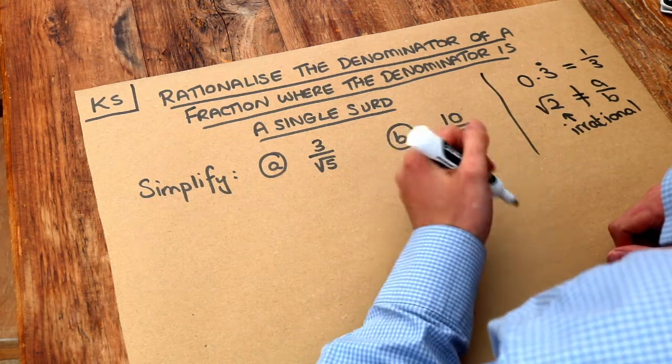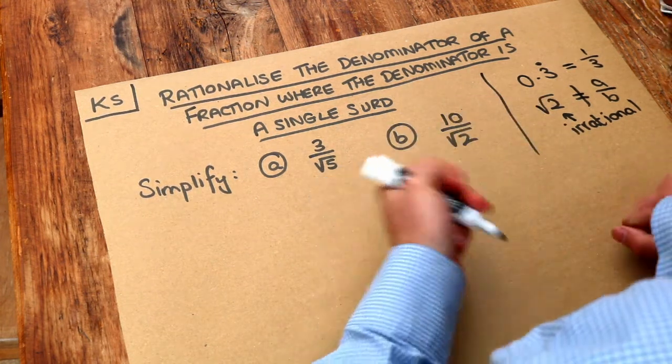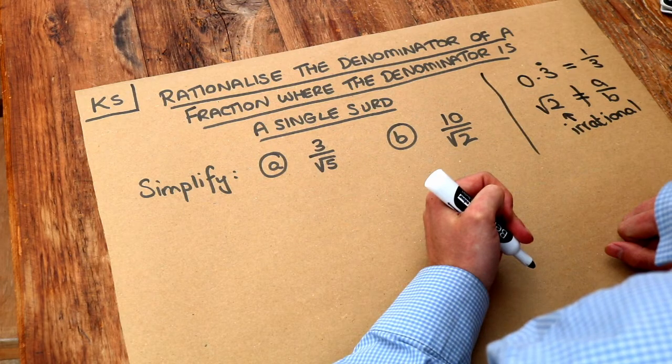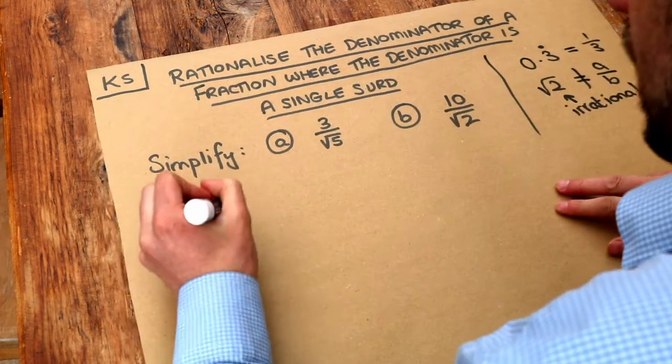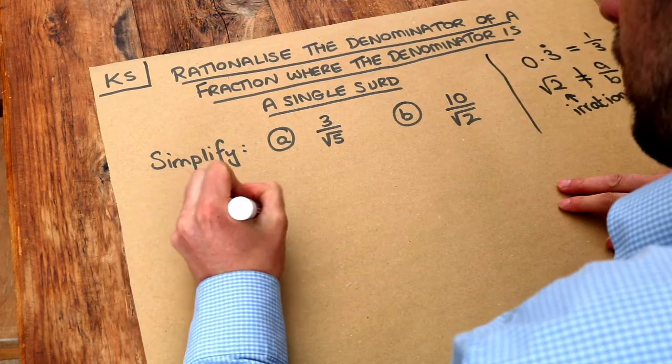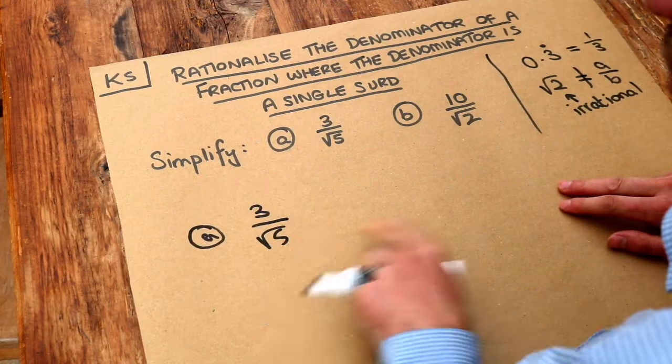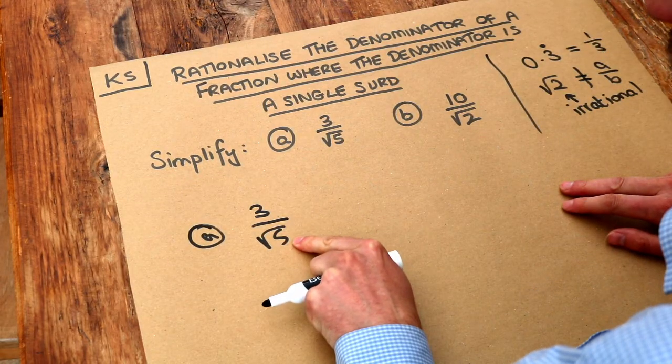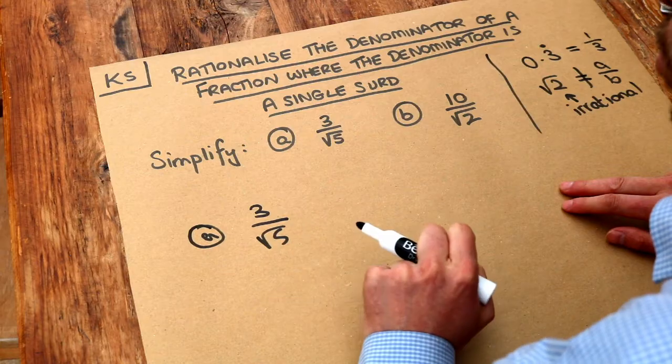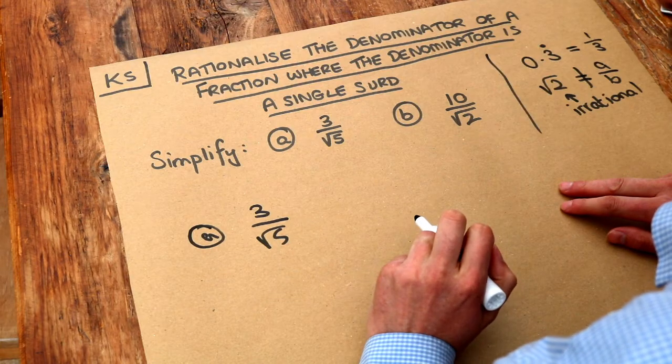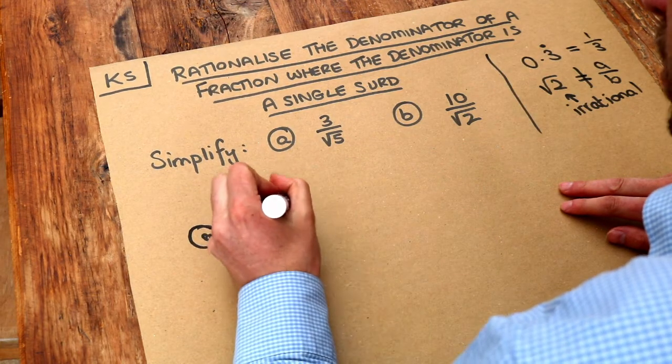Now don't worry too much about why we do this - I did explore that in my longer exam skills video on surds. But let's just look at the method. If we have 3 over root 5 and we want to get rid of the surd in the denominator so it's not a surd anymore, then the trick is to multiply top and bottom by root 5.